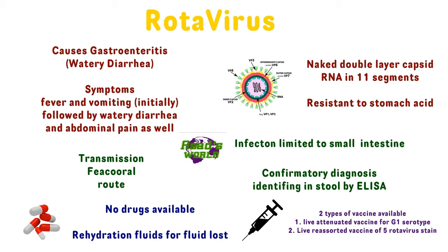Hi guys, in this video I'll be summarizing the topic of rotavirus. Rotavirus is a non-enveloped virus that has a double-layer capsid and RNA in 11 segments. It's basically resistant to stomach acid, and that's why feco-oral transmission is possible. It actually goes from the oral route through your stomach to the intestine and infects the small intestine.